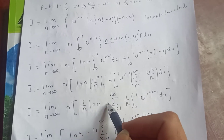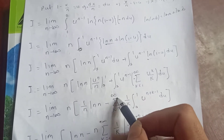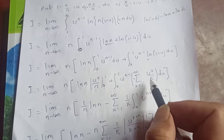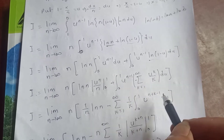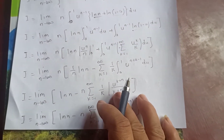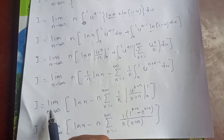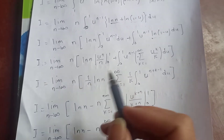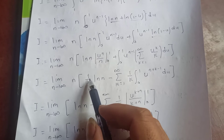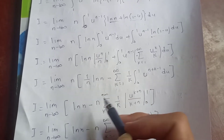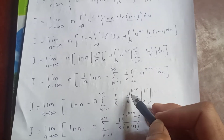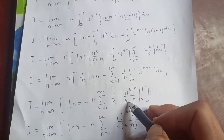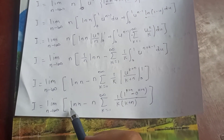So I = lim_{n→∞} n · [log(n)/n - ∑_{k=1}^∞ (1/k) · ∫₀¹ u^(n+k-1) du]. Evaluating the remaining integral: ∫₀¹ u^(n+k-1) du = [u^(n+k)/(n+k)]₀¹ = 1/(n+k). Therefore I = lim_{n→∞} [log(n) - n · ∑_{k=1}^∞ 1/(k(n+k))].